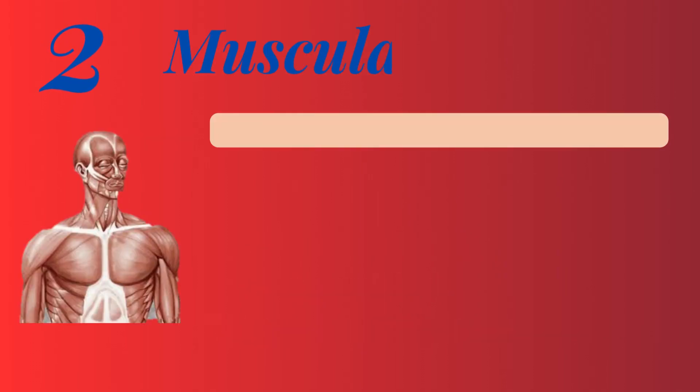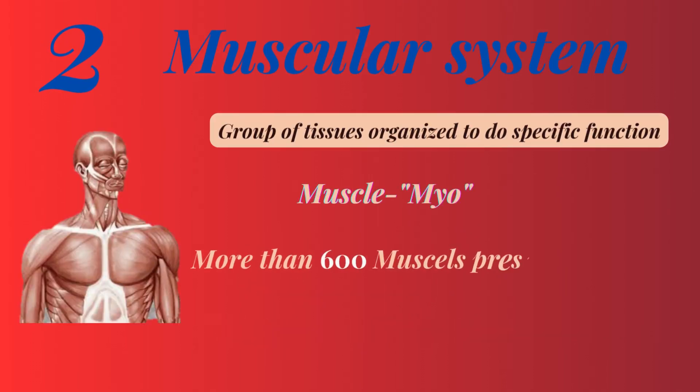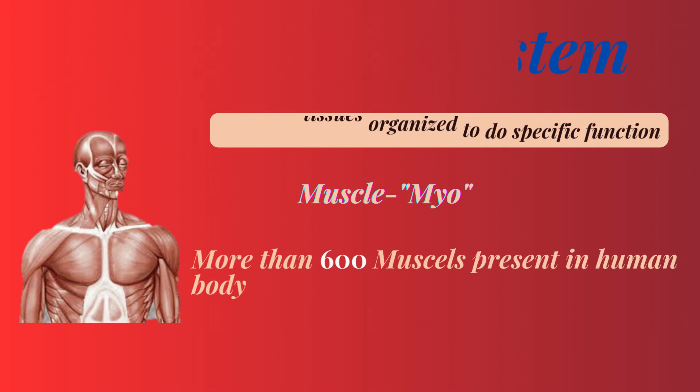Number two: the muscular system. A group of tissues organized to do a specific function is called muscle. The medical term for muscle is 'myo'. More than 600 muscles are present in the human body.